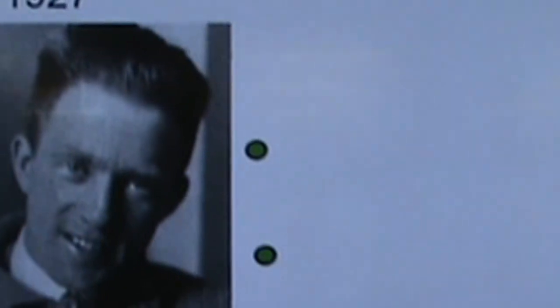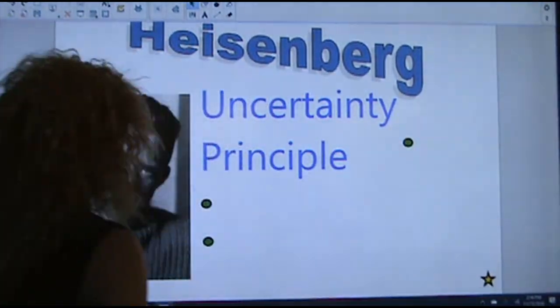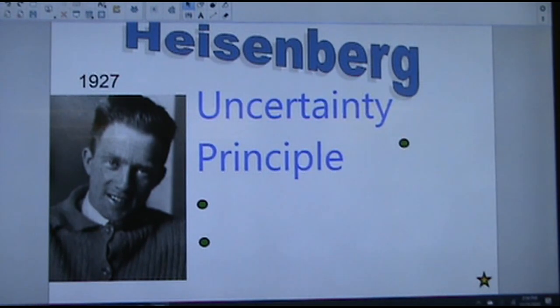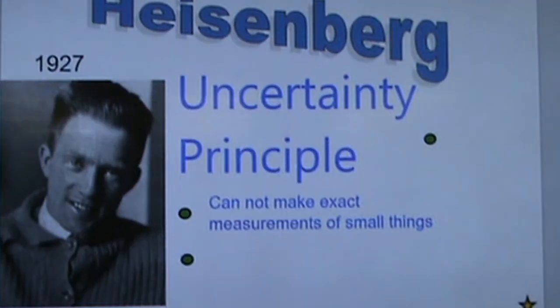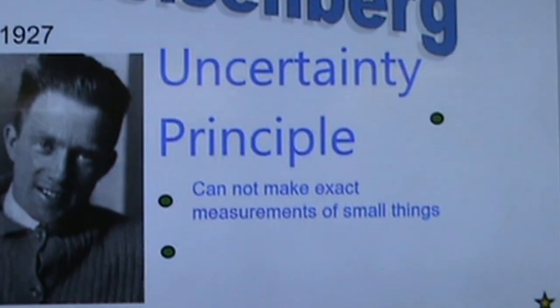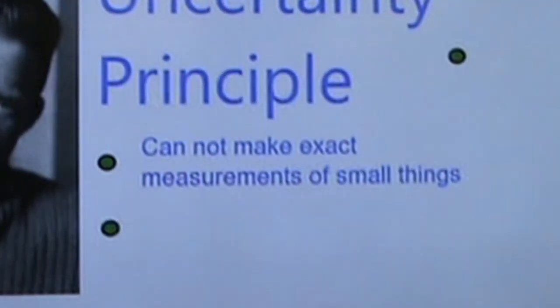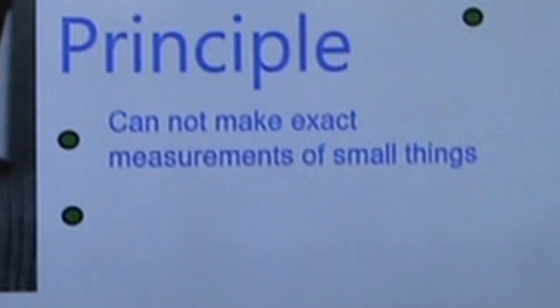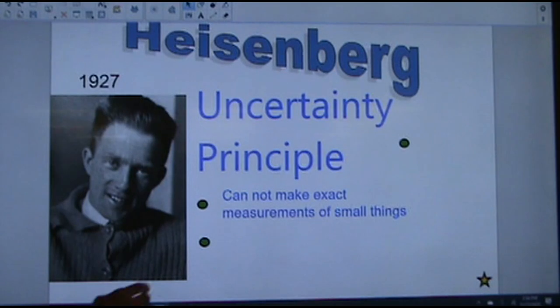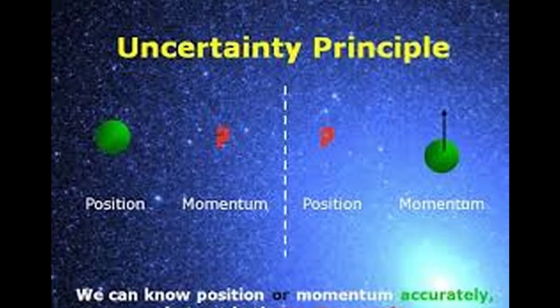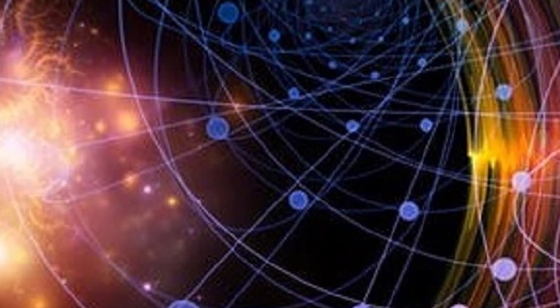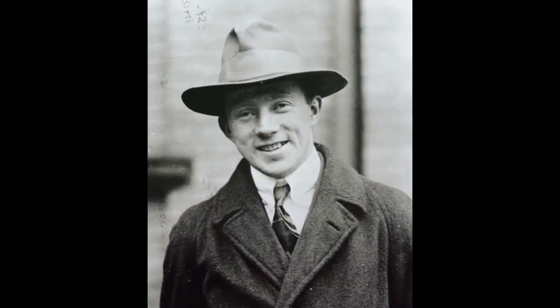Werner Heisenberg was a German scientist, and in 1927 he was awarded a Nobel Prize for the uncertainty principle. It tells us that the more we know about the position of a really small object like the electron, the less we know about where it's going to be in the future. We can't make exact measurements of really small things, so we have to think about things more in terms of probability. It also made the crazy prediction that electrons can actually bob ahead and back in time — they're not restricted to an exact moment in time because of how small they are.